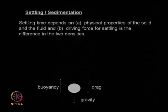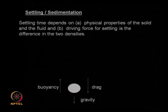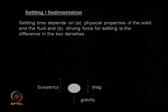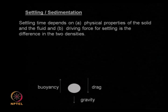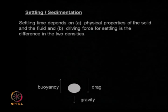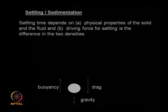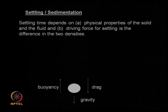Sedimentation is the cheapest process — all you need is a large vessel and enough settling time for solids to settle comfortably, giving good separation between solids and clear supernatant. The settling time depends on the physical properties of the solid (density, size, porosity) and the driving force — the difference in density between solid and liquid. A large density difference gives good settling; a small difference means very slow settling.